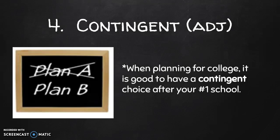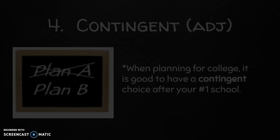Number four is contingent, which is an adjective. The definition for contingent is possible and likely but not certain — it's a conditional thing, dependent on uncertain conditions. You may have heard of a contingency plan, which is a plan B, a backup. So if something is contingent, it is that backup option. An example sentence is: when planning for college, it is good to have a contingent choice after your number one school.